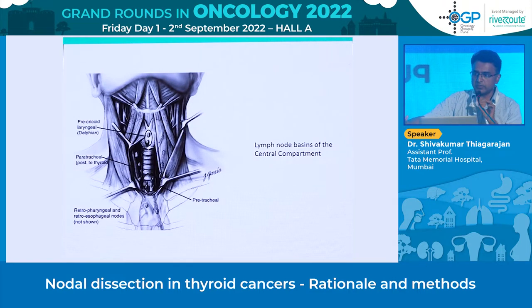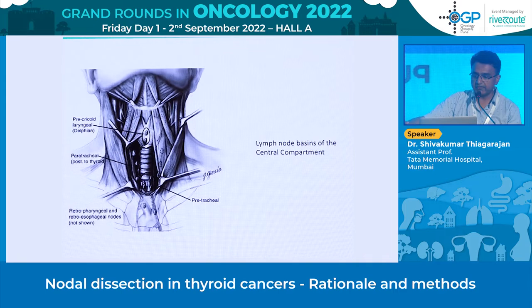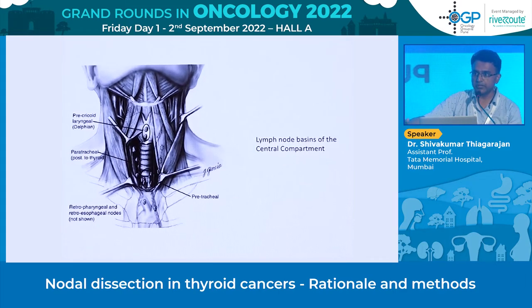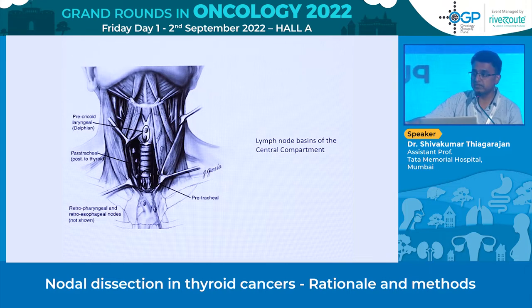Within the central compartment, it is divided into the pre-laryngeal or pre-cricoid node — also known as the Delphian node — the paratracheal nodes on either side of the trachea, and pre-tracheal nodes till the innominate vessels. Rarely you have retropharyngeal and retroesophageal nodes, which are not commonly involved in thyroid cancers but can be involved at times. These are the node groups in the central compartment we need to be aware of.